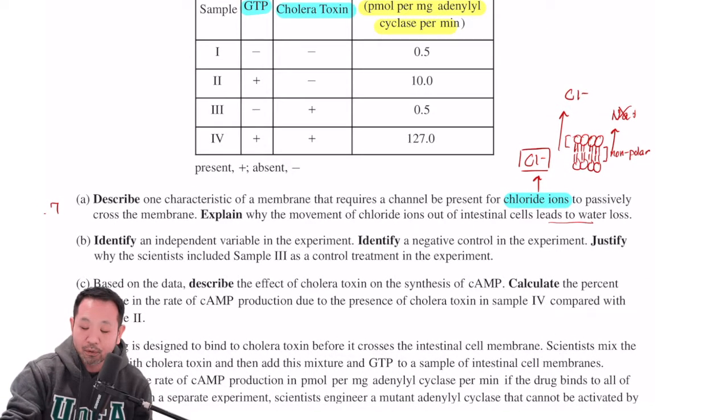Now, identify a negative control of the experiment. Well, the negative control would be something like sample 1. Because this is the more obvious one anyway. Sample 1 here neither contains GTP nor cholera toxin. Negative controls are typically used to show that the presence of either GTP or the cholera toxin is going to have some impact on the dependent variable, such that in the absence of either one of these or both, that you may not see the results that you expect to see.